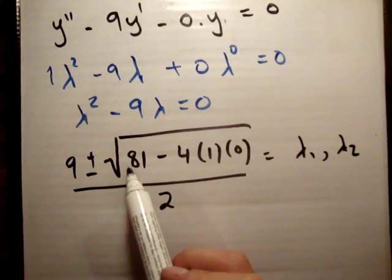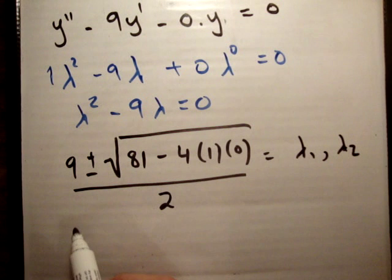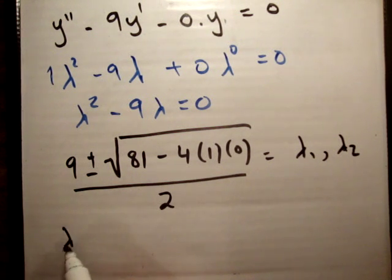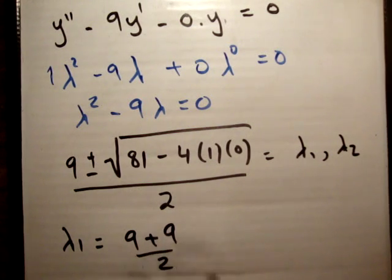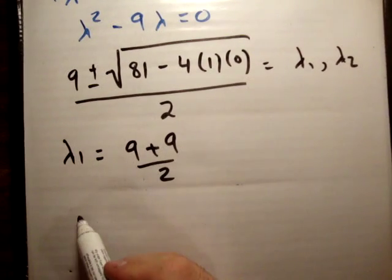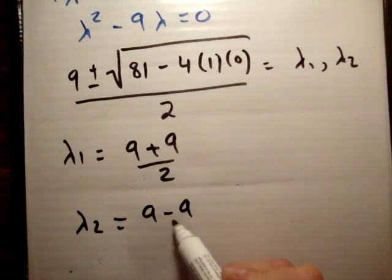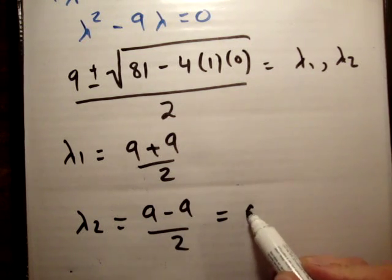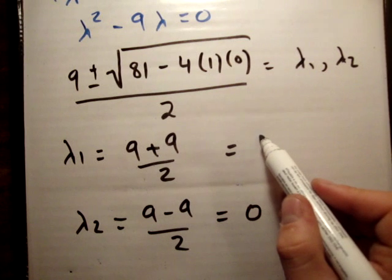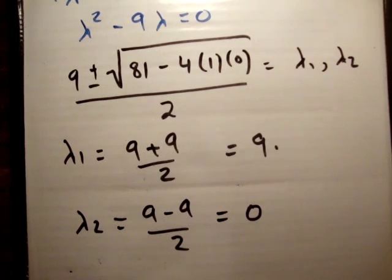So it's 9 plus 9 over 2, so the first root, lambda 1, is going to be equal to 9 plus 9 over 2. And the second root, lambda 2, is going to be 9 minus 9 over 2, is equal to 0, is equal to 9. So we now have two roots, lambda 1 and lambda 2, which are equal to 9 and 0.